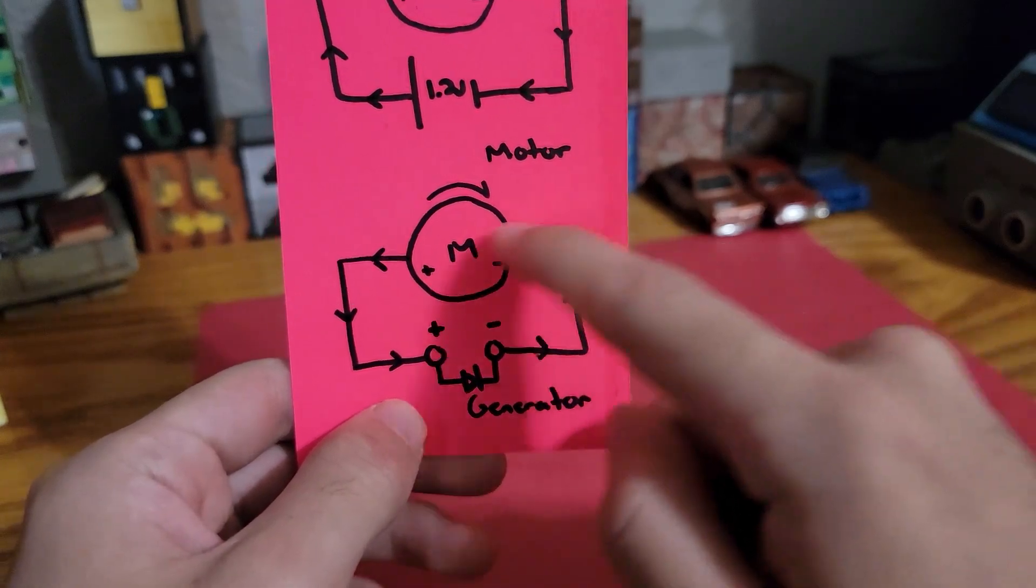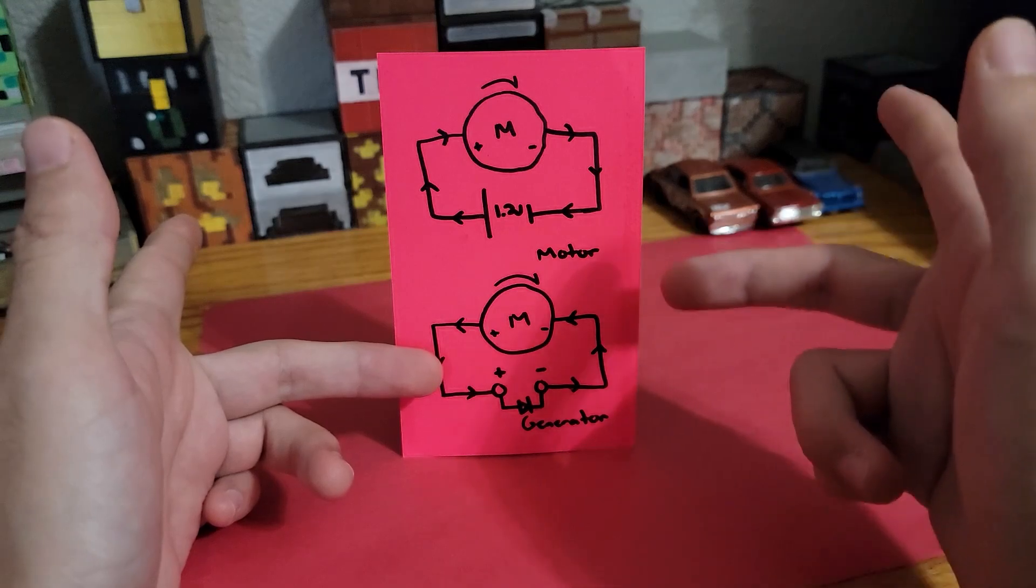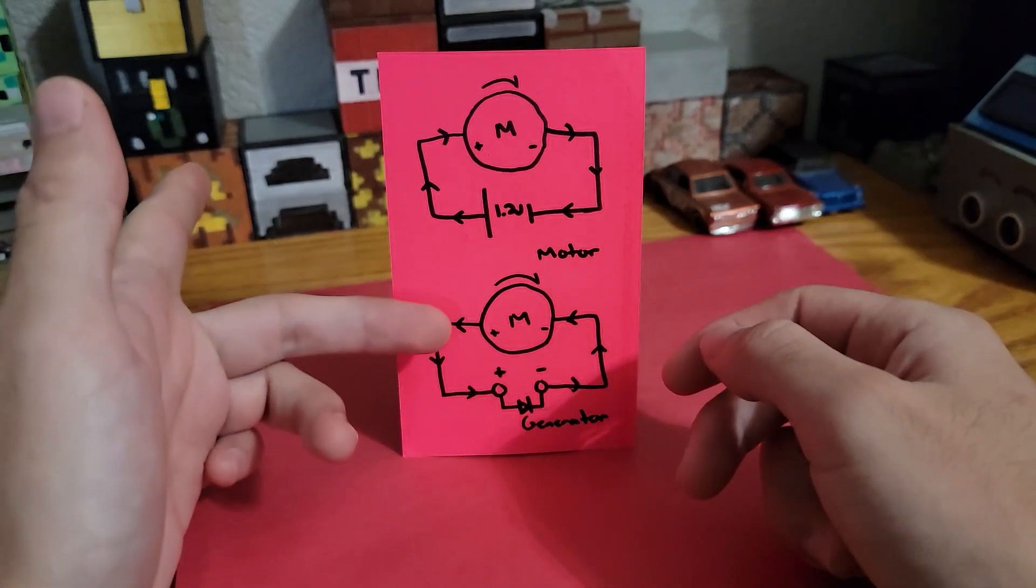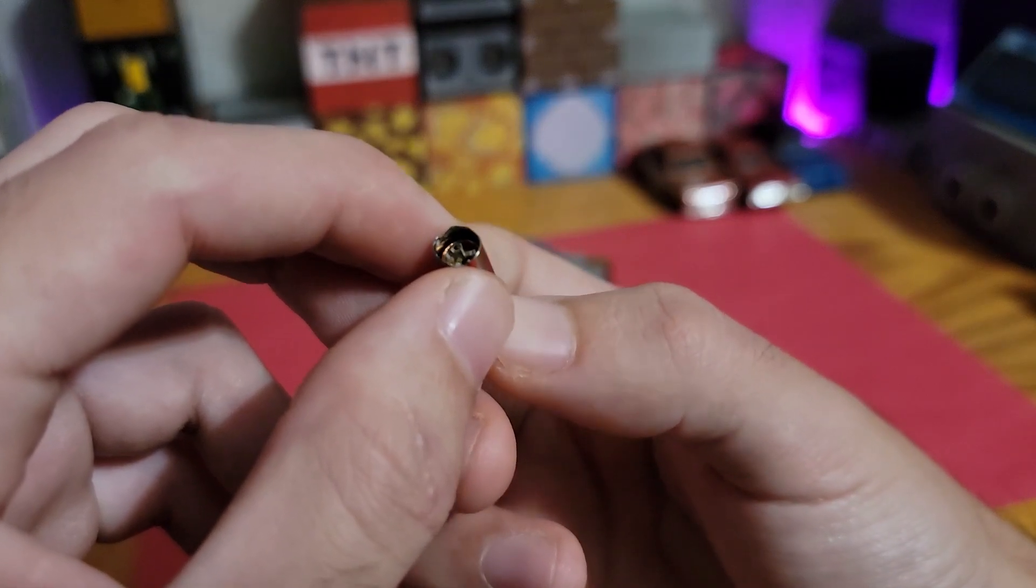The conventional current will be able to run through the LED and continue the loop. This explains the need for the two separate rules: the right hand rule for generators and the left hand rule for motors.